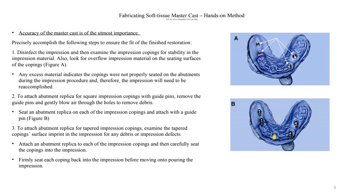To attach abutment replicas for square impression coppings with guide pins, remove the guide pins and gently blow air through the holes to remove debris. Seat an abutment replica on each impression coping and attach it with the guide pin. For tapered impression coppings, examine the tapered coping surface, inspect the impression for any debris or defects, attach an abutment replica to each impression coping, and carefully seat the copings back into the impression firmly before pouring up.